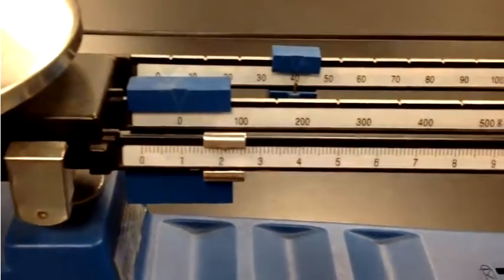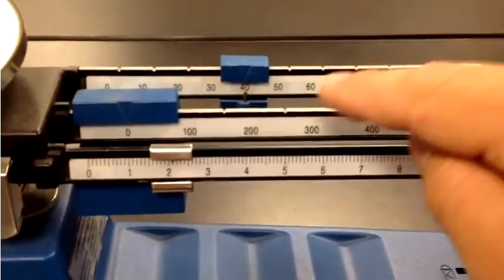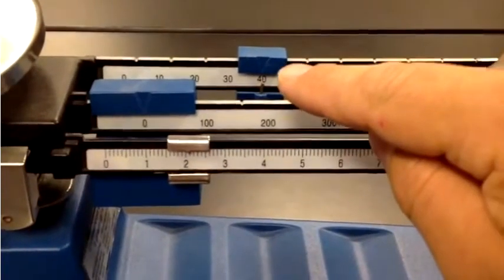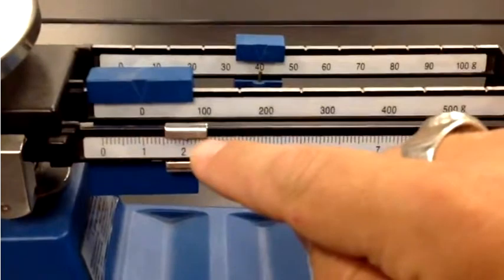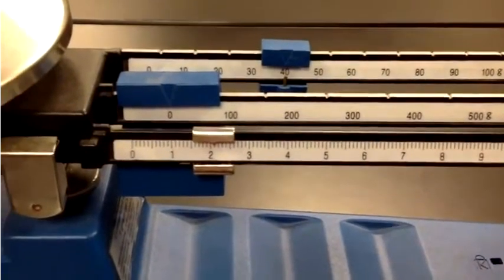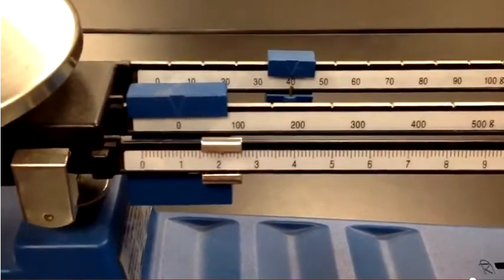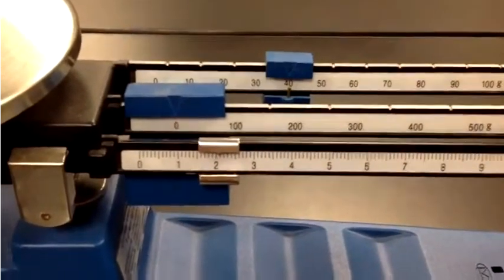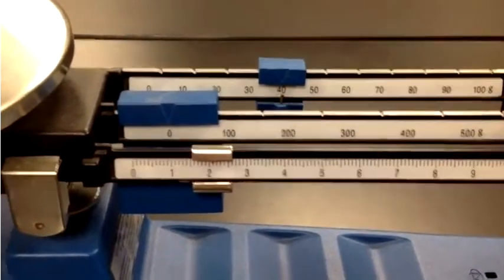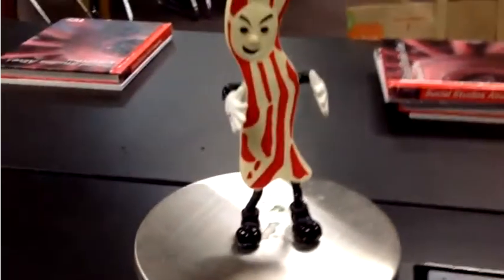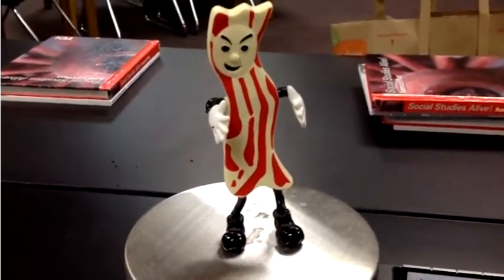So now let's look at it. It appears that it's 42 and then one little line, which means .1, just like we did with our ruler. So it'd be 42.1 grams. There you go Mr. Bacon. Thank you very much.